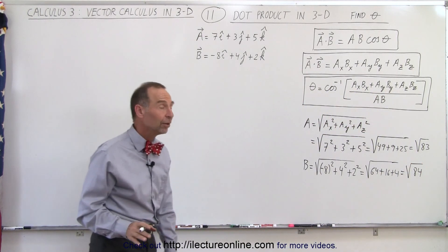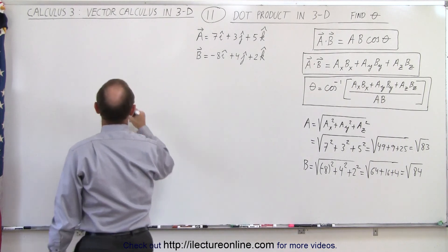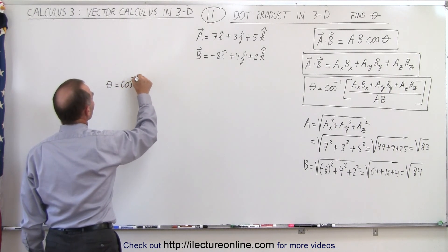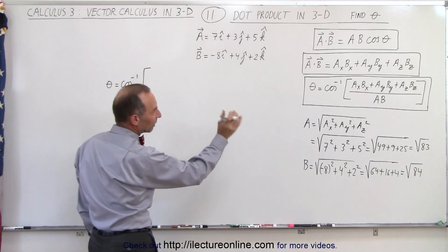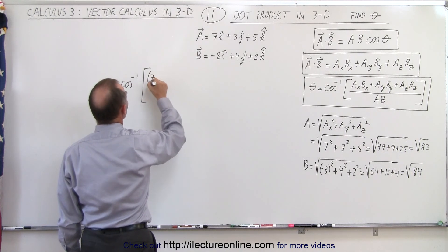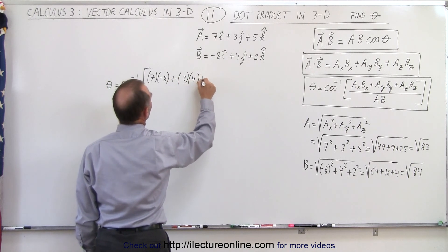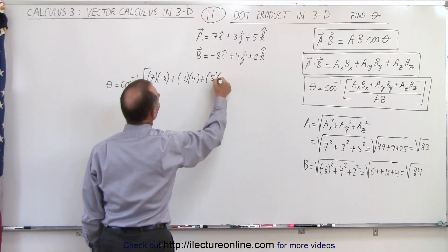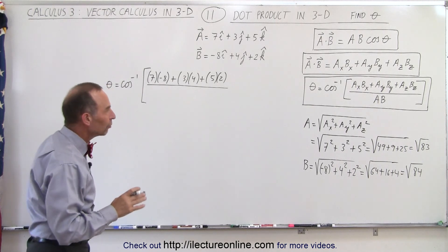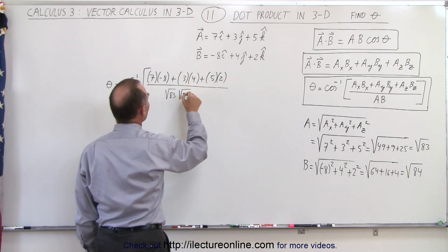Now that we have both magnitudes, we can plug into our equation for the angle theta. Theta is equal to the inverse cosine of, in the numerator, the sum of the products of corresponding components of the two vectors — so 7 times negative 8, plus 3 times positive 4, plus 5 times 2 — divided by the product of the magnitudes, which is the square root of 83 times the square root of 84.